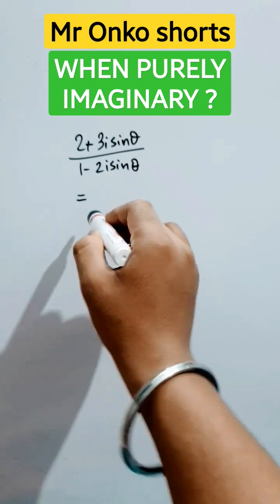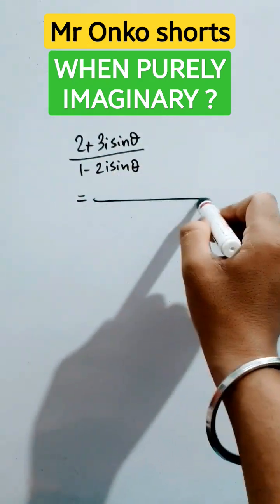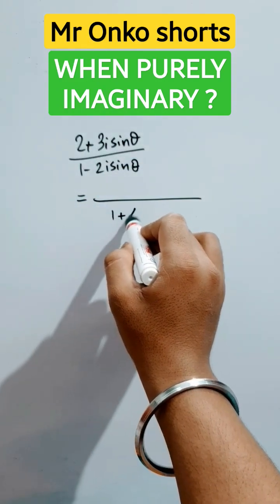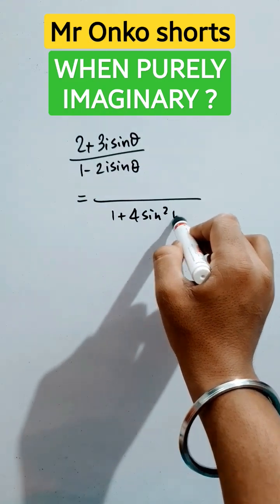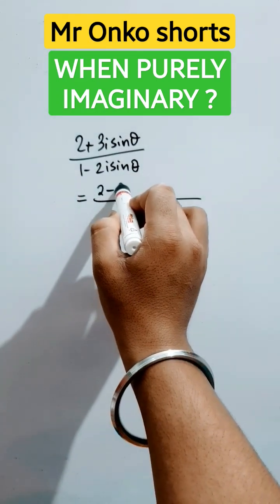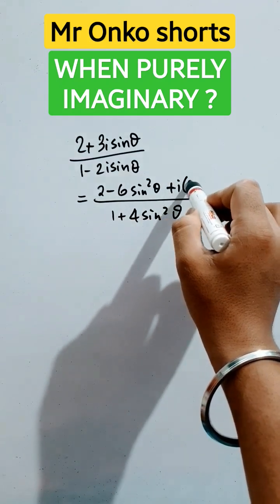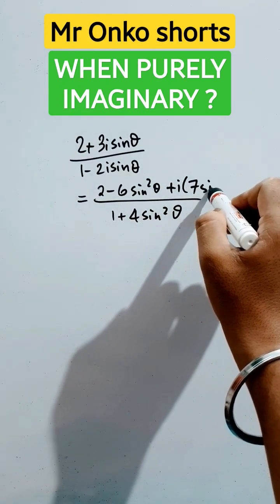We will multiply this with the conjugate of 1 plus 2i sin theta. In the denominator it will be 1 plus 4 sin squared theta, and in the numerator it will be 2 minus 6 sin squared theta plus i times 7 sin theta.